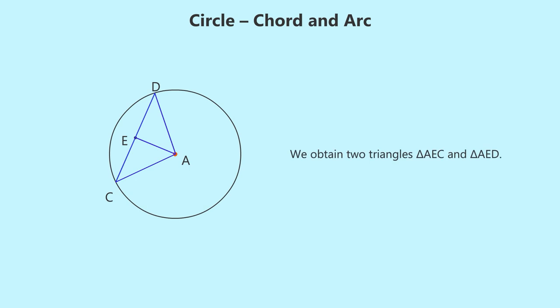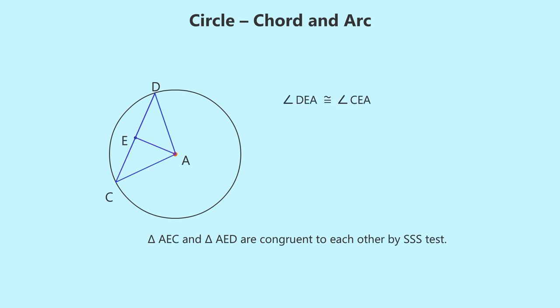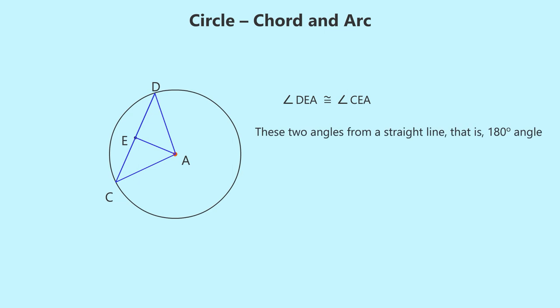We obtain two triangles, triangle AEC and triangle AED. In these two triangles, all the three pairs of corresponding sides are congruent. Hence these triangles are congruent to each other by SSS test. Hence angle DEA and angle CEA are congruent to each other since they are corresponding angles in congruent triangles. But note that these two angles form a straight line, that is 180 degree angle, and so both of them must measure 90 degrees. It means that angle AEC equals 90 degrees, and so AE is perpendicular to chord CD.